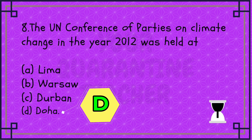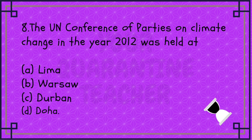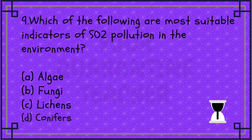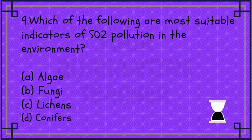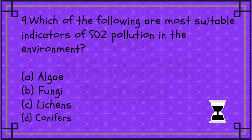Next: Which of the following are most suitable indicators of SO2 pollution in the environment? This is a very important question. Option A Algae, Option B Fungi, Option C Lichens, Option D Conifers.